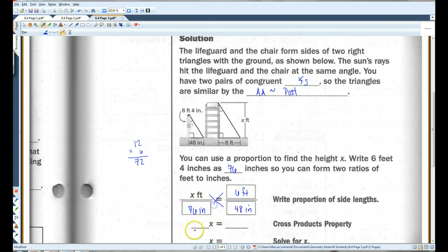When I cross multiply, 48x equals 76 times 6, which is 456.